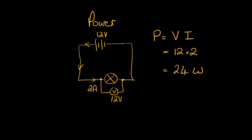So every second 24 joules of energy are being transferred from chemical energy in the battery to electrical energy and then to heat and light in the bulb.